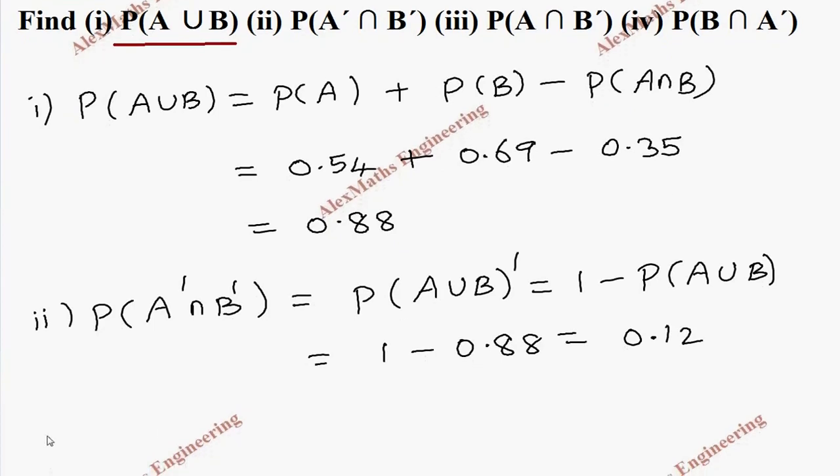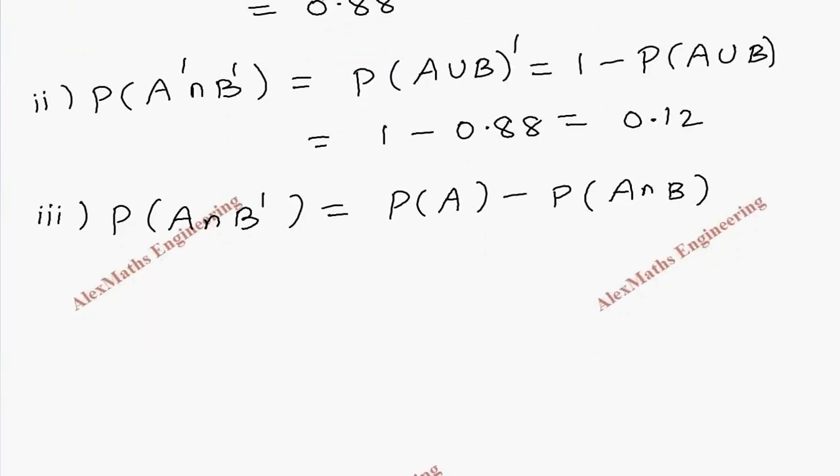Then coming to the third subdivision, we need P of A intersection B dash. This is by formula P of A minus P of A intersection B. If you take a small diagram for better understanding, these are two sets A and B. This is A, this is B, and this middle part is A intersection B.